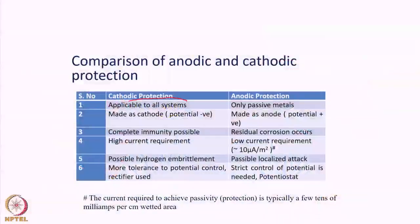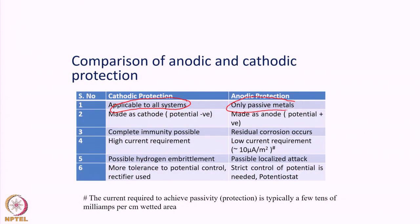Cathodic protection is a thermodynamic concept and is applicable to all systems. You simply bring down the potential towards a negative value, and a corresponding decrease in corrosion rate occurs. However, anodic protection is possible only when the metals and the corrosive medium exhibit passivity, so it is restricted to certain systems where metals can exhibit reasonable passivity.